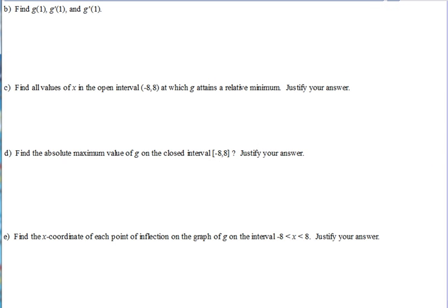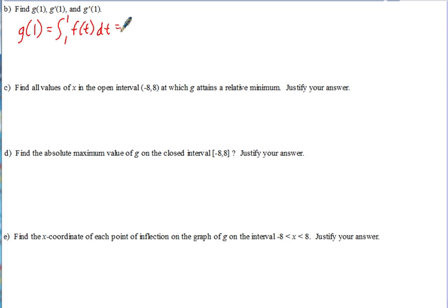Now for part b: find g(1), g'(1), and g''(1). For g(1), that's the integral from 1 to 1 of f(t) dt. Any time the lower and upper limits are the same, there's no area enclosed, so the definite integral always equals 0. Therefore g(1) = 0.